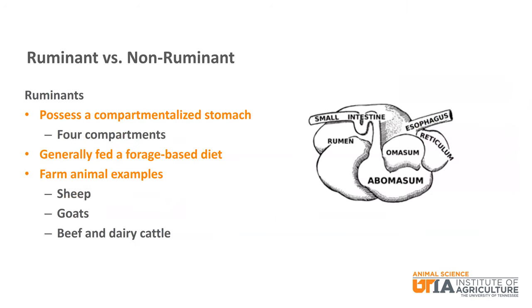You will often hear that ruminants have four stomachs — that is not true. They have one stomach with four compartments: the rumen, reticulum, omasum, and abomasum. Each compartment has a distinct function as it relates to the digestion of ingested feed. Ruminants are generally fed a forage-based diet. Farm animal examples include sheep, goats, beef cattle, and dairy cattle.